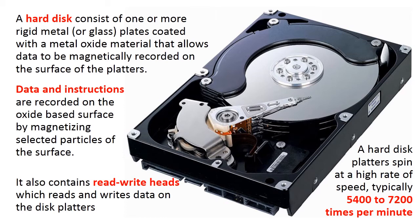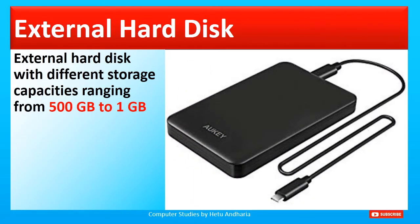A hard disk platter spins at a high rate of speed, typically 5400 to 7200 times per minute — this is known as RPM, rotation per minute or revolution per minute — and when the computer is on, it keeps constantly rotating. This is the image of an external hard disk, also called a pocket hard disk. Generally the storage capacity of an external hard disk is 500 GB up to 1 TB.